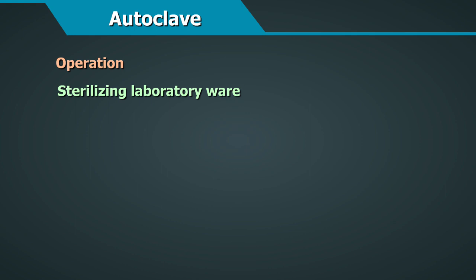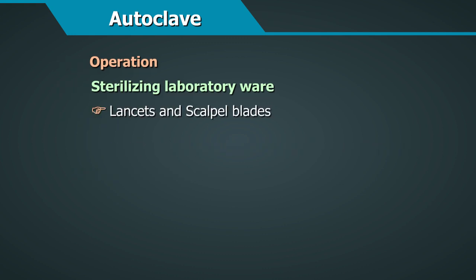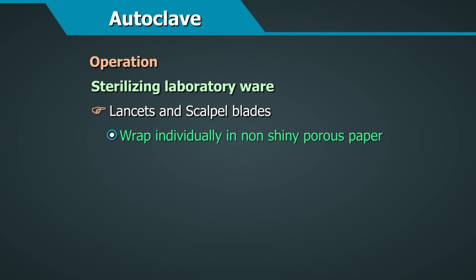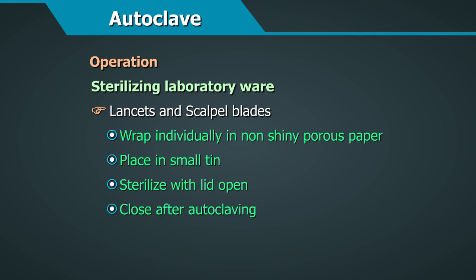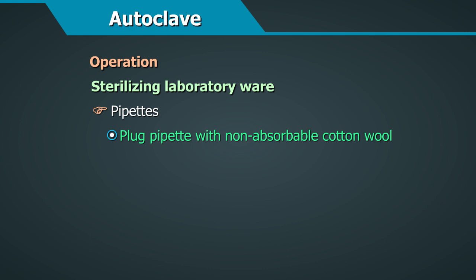When sterilizing laboratory wear, after cleaning, prepare reusable items as follows. For syringes, wrap polypropylene, nylon, or glass syringes with the barrel alongside the plunger in a clean cloth and close with adhesive tape or tie with a cloth strip. For lancets and scalpel blades, wrap stainless steel reusable lancets and scalpel blades individually in clean pieces of non-shiny porous paper and place in a small tin or other autoclavable container, sterilizing with the lid open and closing after autoclaving.